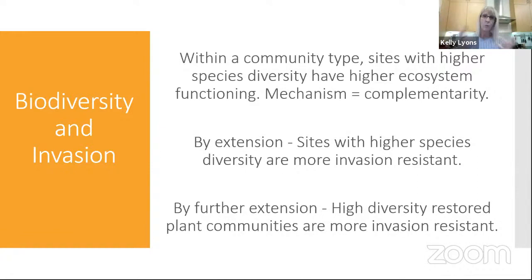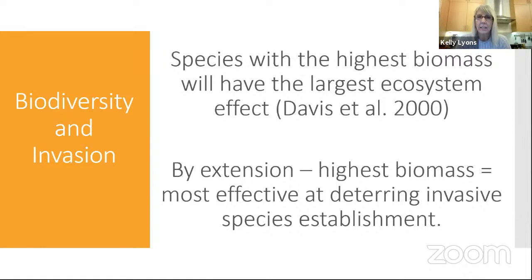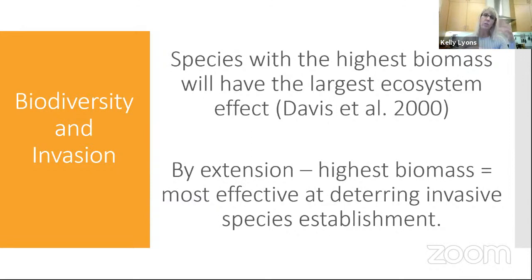The converse is the mass ratio hypothesis: species with really high biomass have the largest ecosystem effects, and the most dominant species drives how the ecosystem operates. By extension, highest-biomass species will be most effective at deterring invasive species establishment. So the question becomes: is diversity the driver, or is it the really competitive dominant species? When I wrote the paper, I posed those two theories at odds — but in the end, both matter.